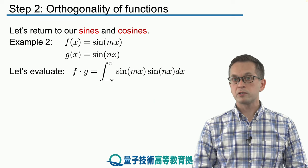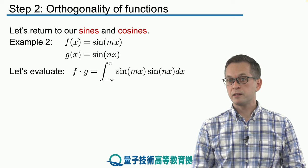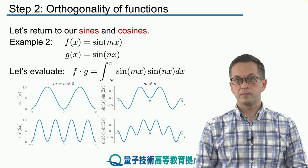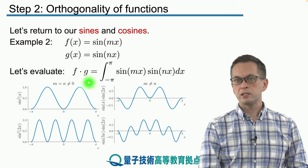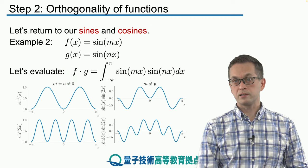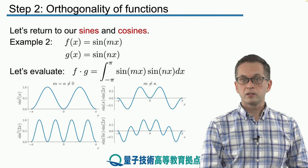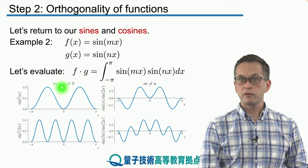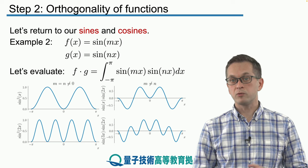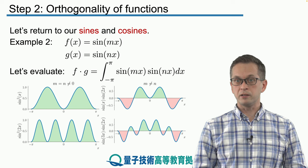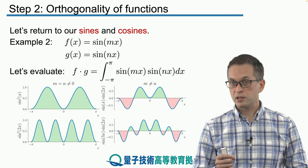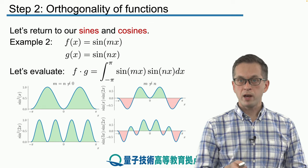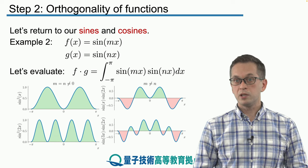Now let's consider both functions as sines at different frequencies and compute the inner product of sine mx and sine nx. When m and n are equal we get one set of curves, and when they differ we get another. We disregard the case when either equals zero since sine of zero is zero. When the sines oscillate at different frequencies the areas under the product curve cancel, so the integral is zero and the functions are orthogonal. However, when both oscillate at the same frequency we only get positive contributions to the integral, so it is not zero.